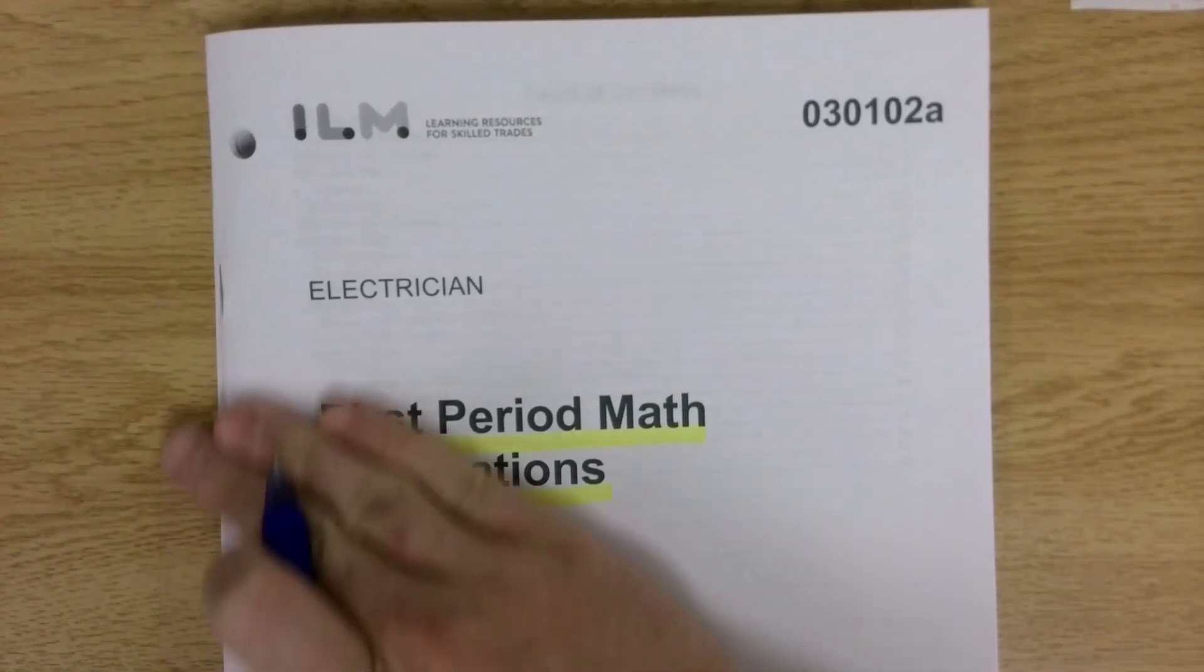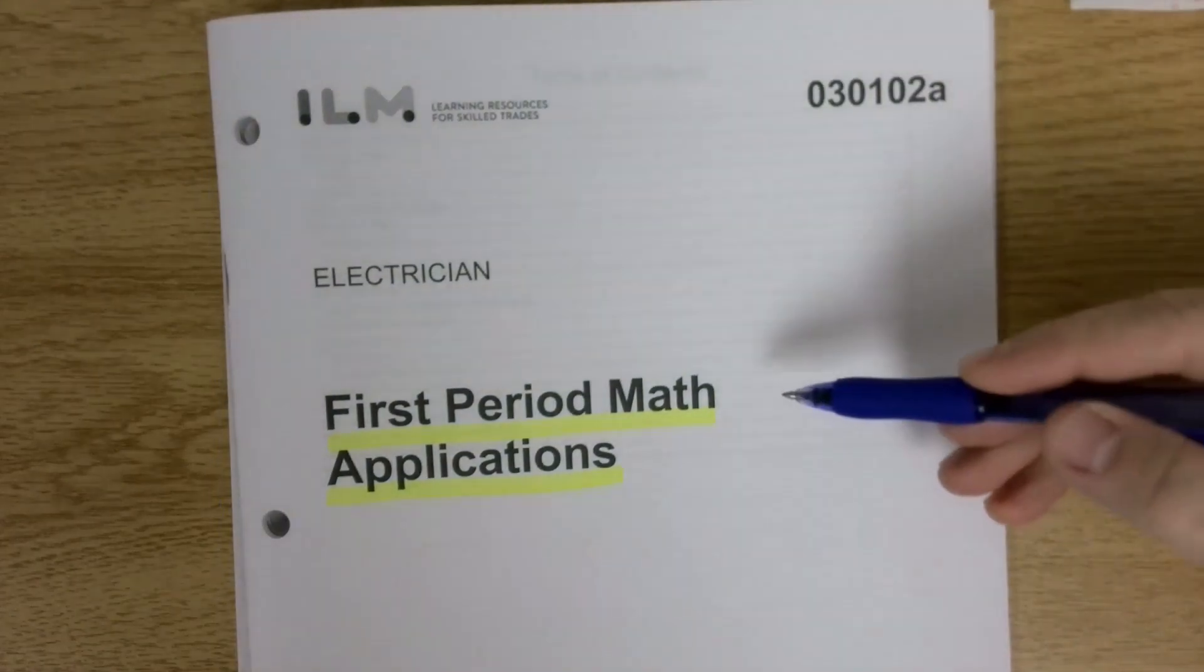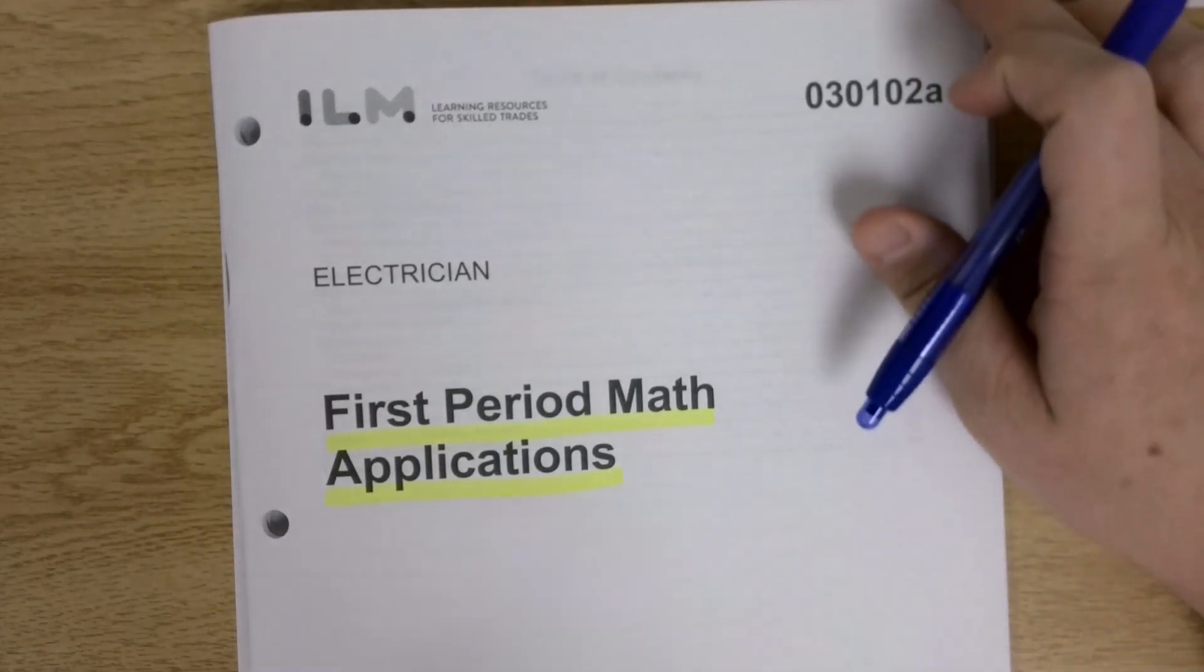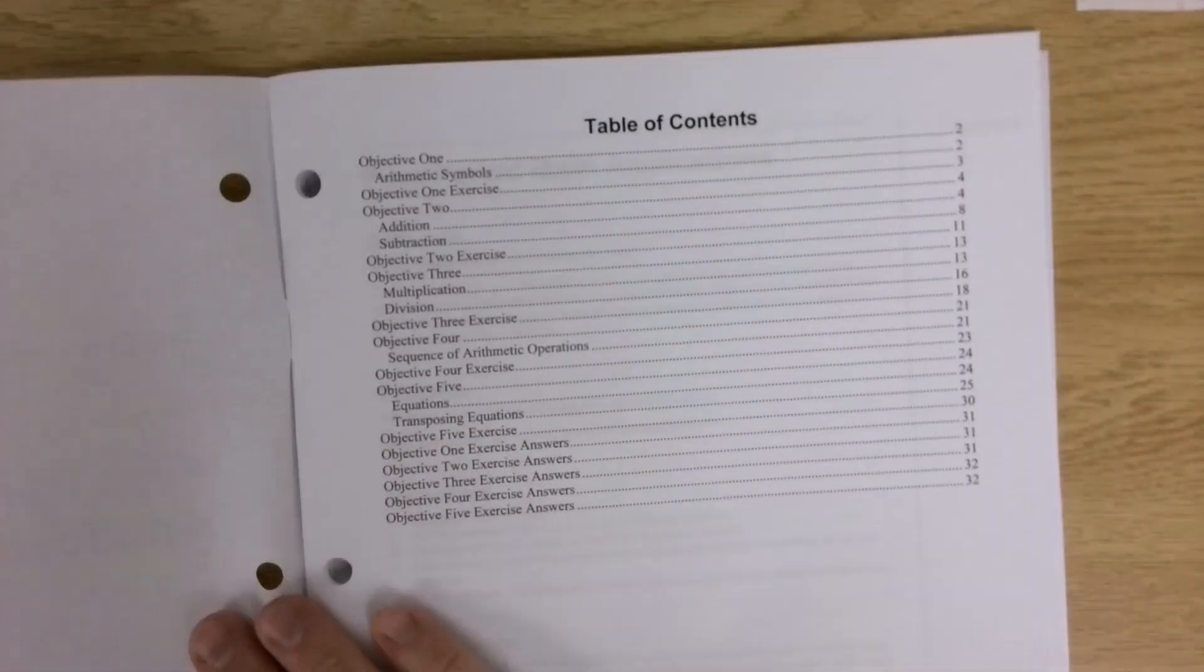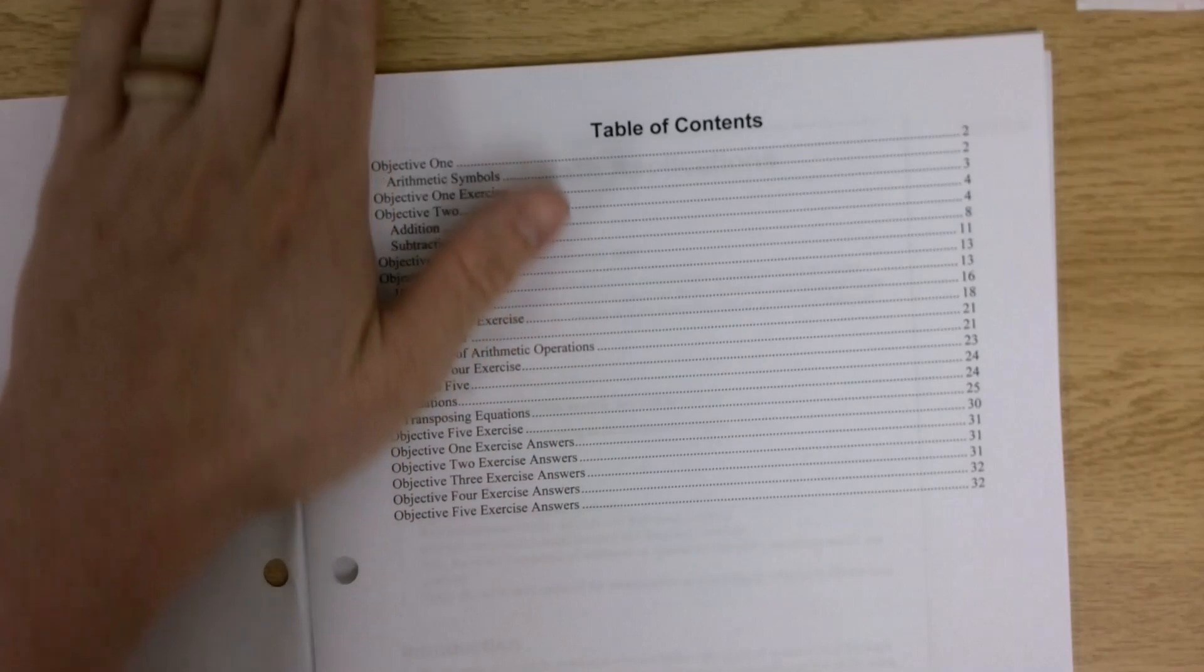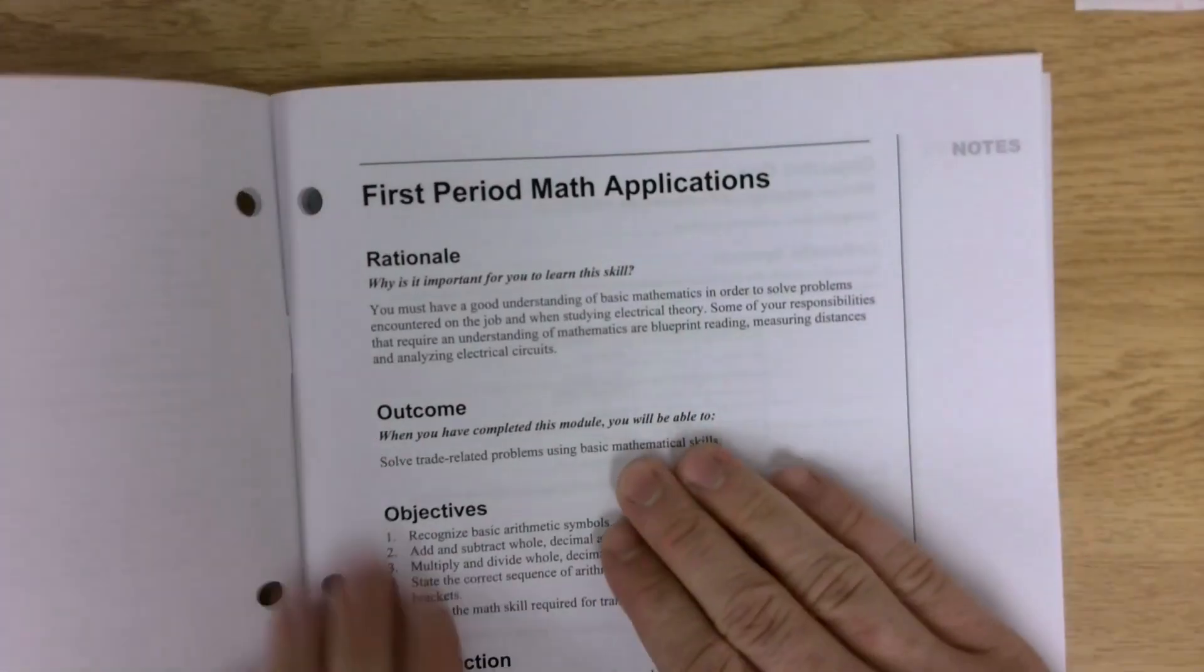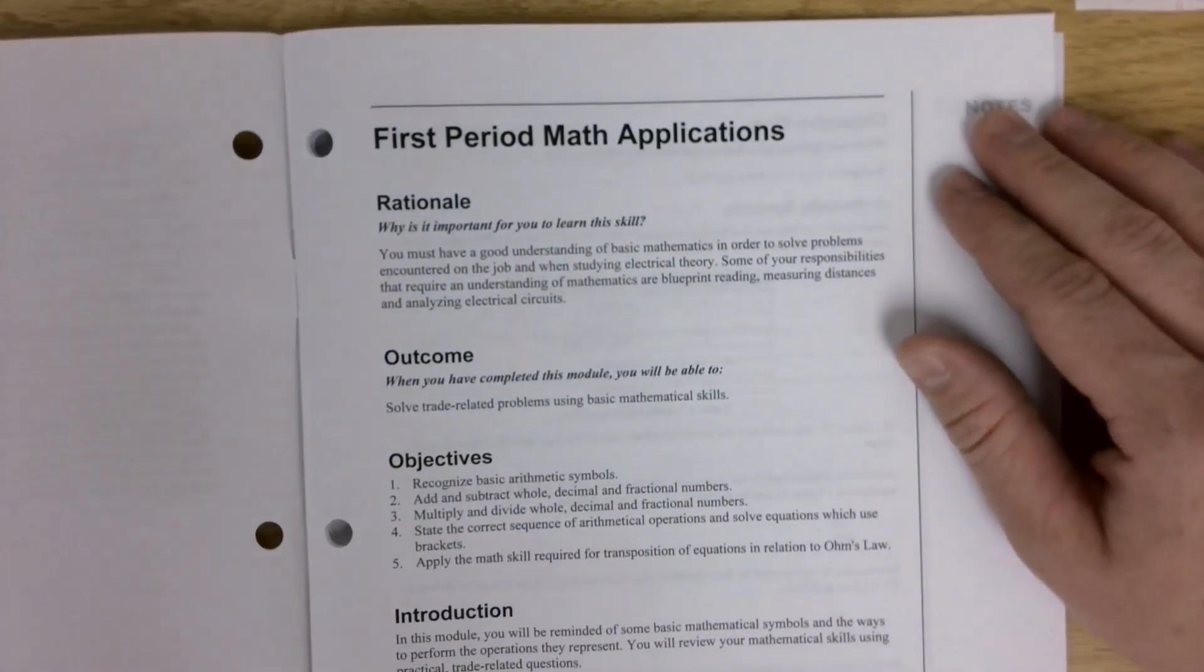Hello everybody. So, for our first theory module, we are doing first period math applications, and seeing as this is the first theory module, I wanted to go over how the modules are structured and how they work. Right off the bat, table of contents, just laying out what's inside.